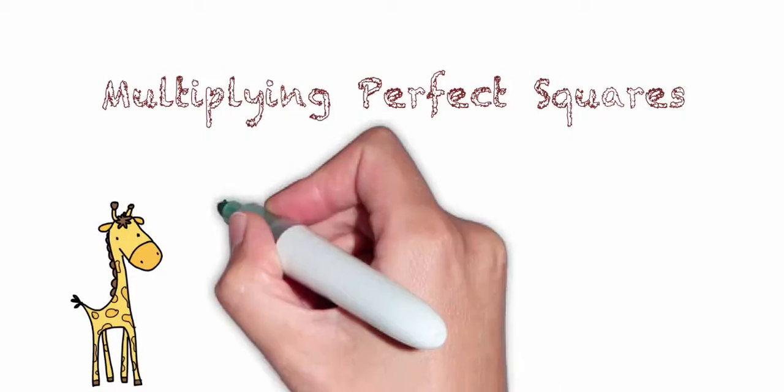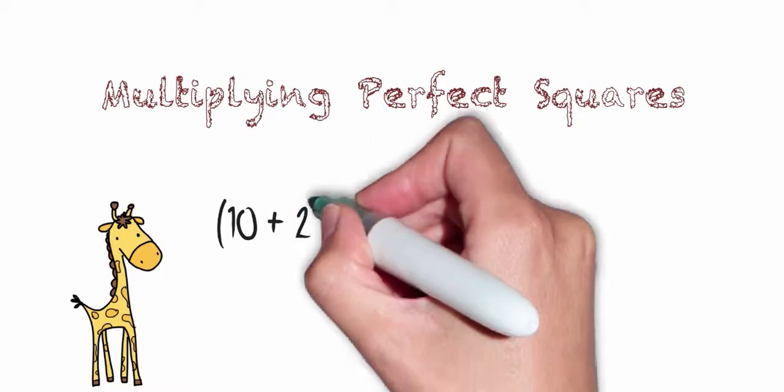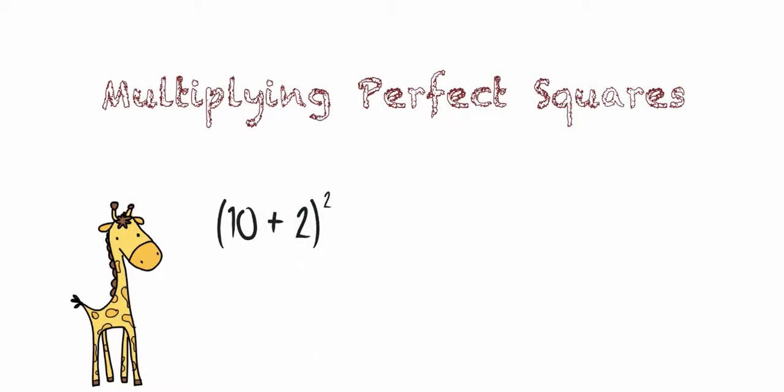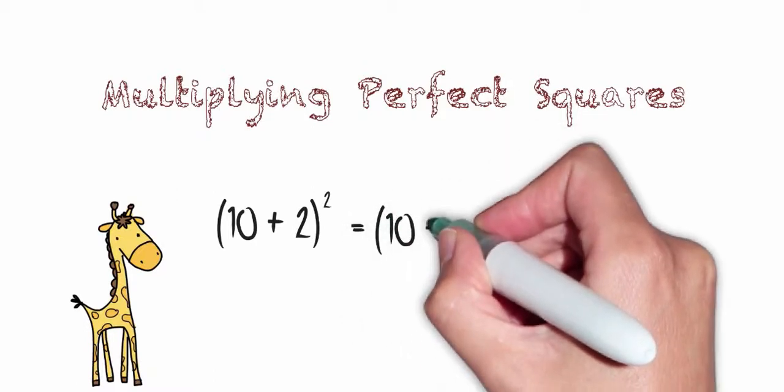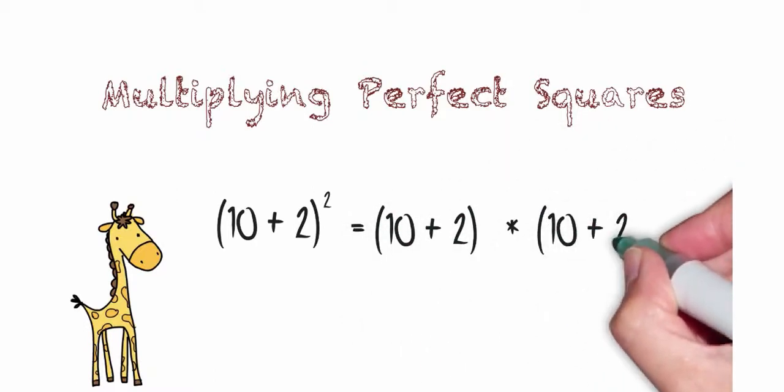For example, let's look at 10 plus 2 quantity squared. Remember that when we square something, we multiply it by itself. So this would become 10 plus 2 times 10 plus 2.